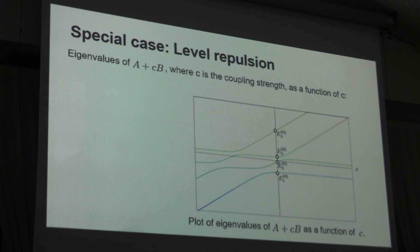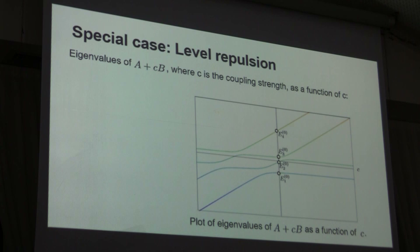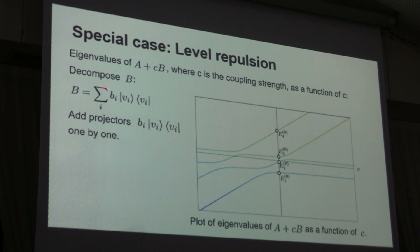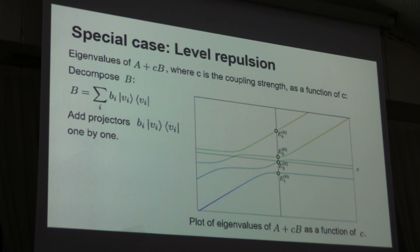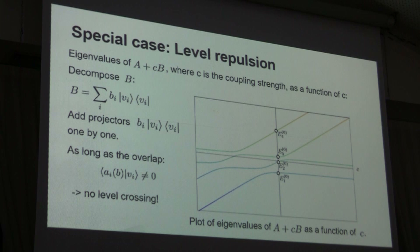We now understand level repulsion better. To remind you: you start with some Hamiltonian A, add another Hamiltonian B, vary the coupling constant of B, and look at the eigenvalue levels — generically, the levels tend not to cross. They approach each other, but as they should cross, they decide not to. We can understand this by decomposing Hamiltonian B into a sum of projectors and adding them one by one. We learned that as long as the overlap between the projector and the eigenvector is non-zero, there will be no level crossing. Because this is generically the case, generically we don't see a level crossing.